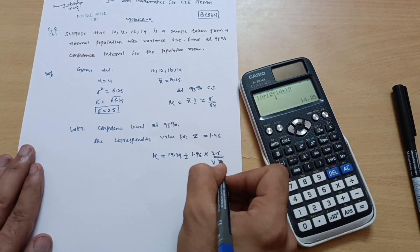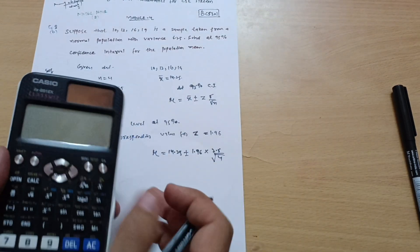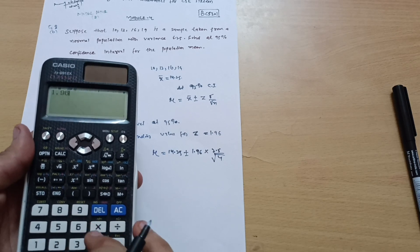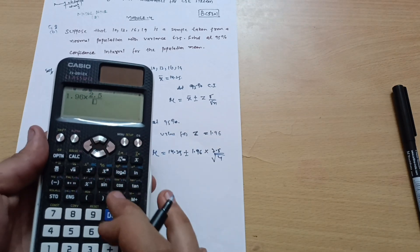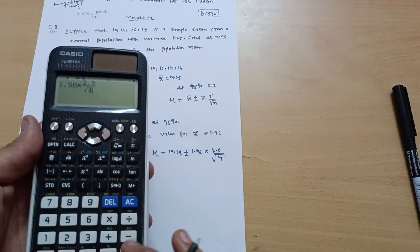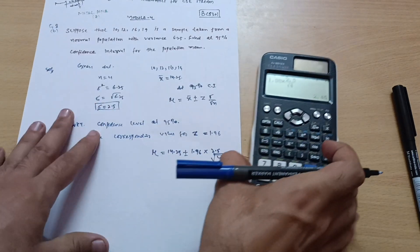So let me calculate this one. 1.96 multiplied by 2.5 divided by root of 4, which is equal to 2.45.